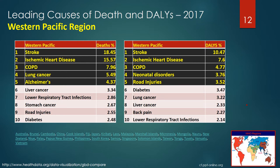The West Pacific region's leading causes of death were stroke, ischemic heart disease, COPD, lung cancer, and Alzheimer's disease. The five leading DALYs were stroke, ischemic heart disease, COPD, neonatal disorders, and road injuries. This is the first time we've seen road injuries on the top five list of DALYs.